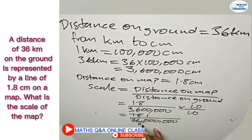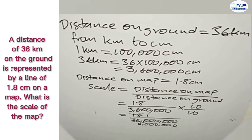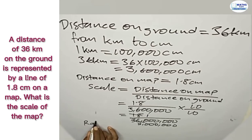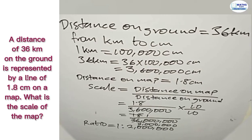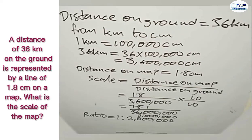We can write this scale in the form of a ratio. The scale in ratio form is equal to 1 is to 2,000,000. So that is the scale of the map.